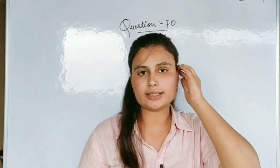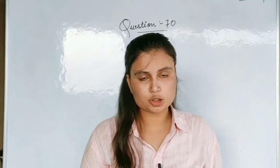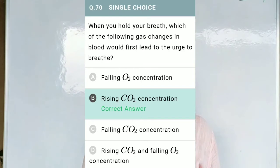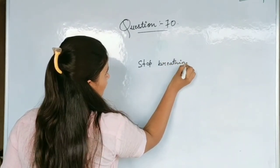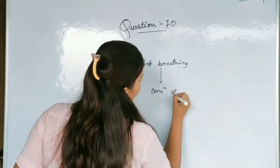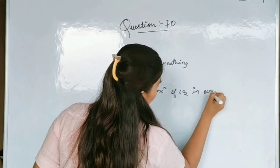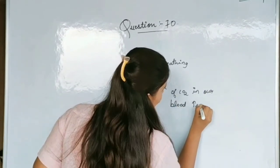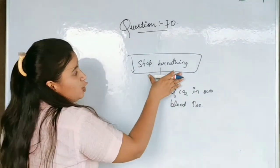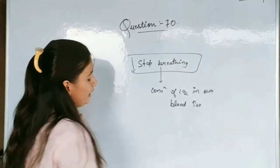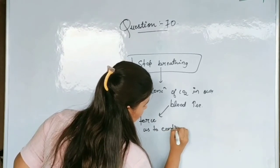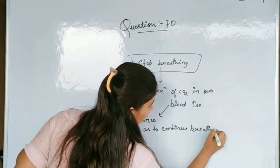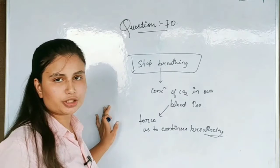Question 69 is not present in the test paper, so we move directly to Question No. 70: When you hold your breath, which gas exchange in the blood would first trigger the urge to breathe? If we stop breathing, the concentration of CO2 in our blood increases, which is going to force us to continue breathing.